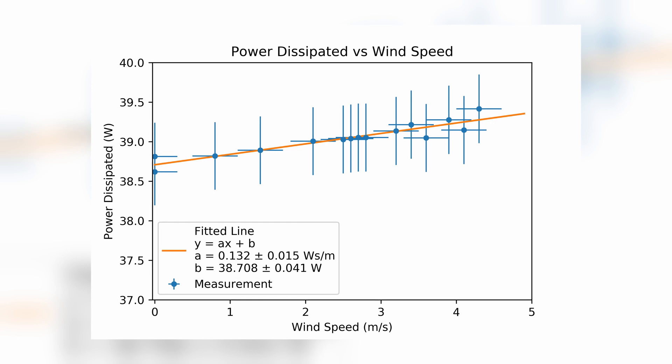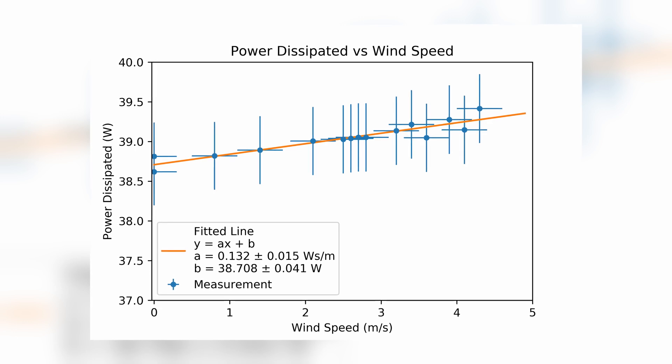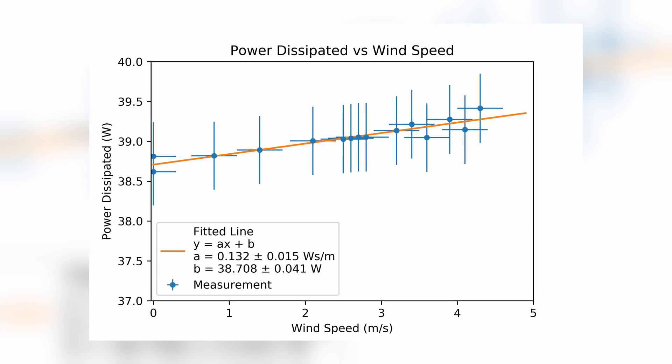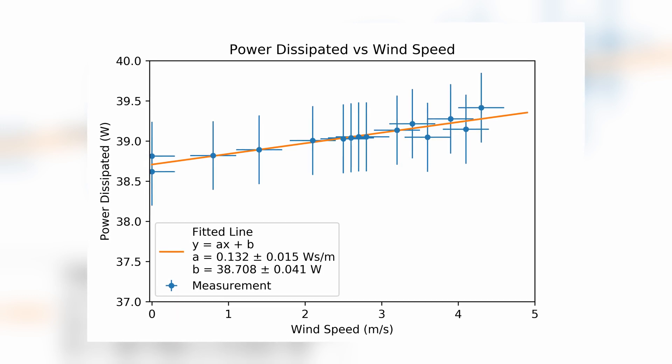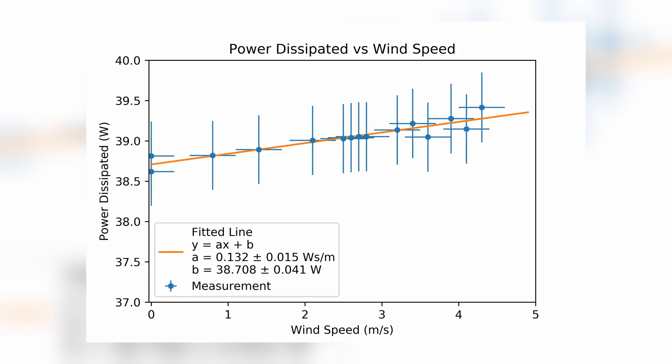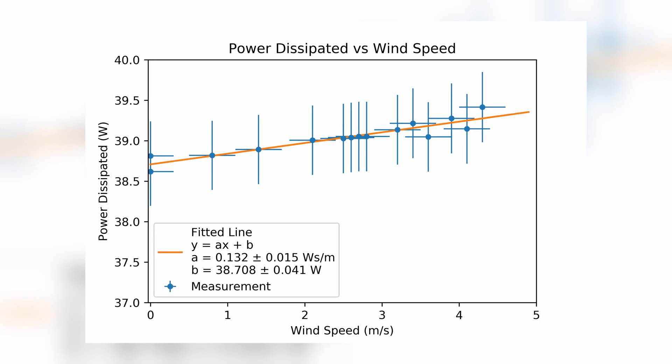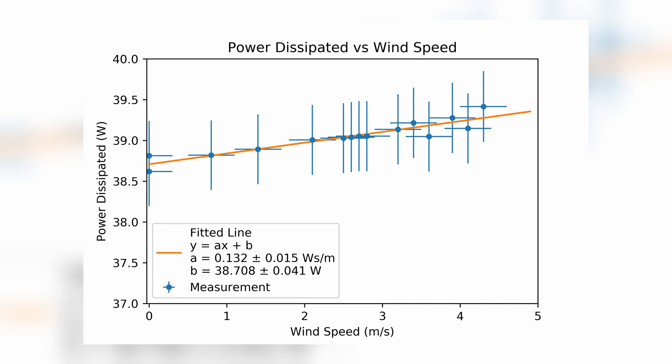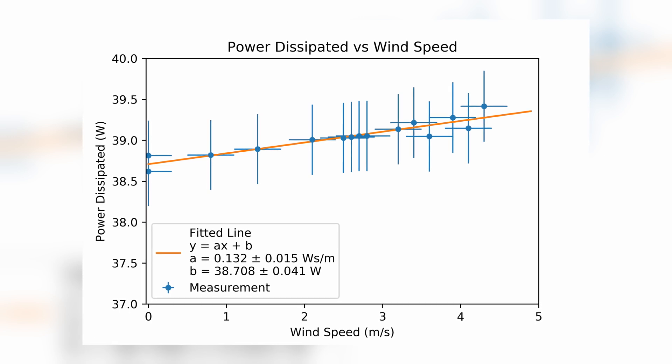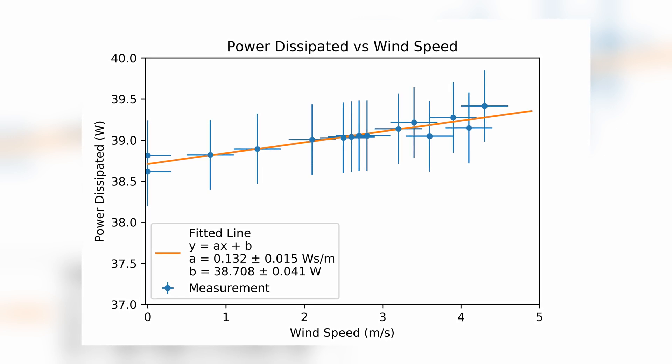In theory, I should be able to measure the power dissipated by the coil and use it to measure the wind speed. Here, the uncertainty in slope is about 11%, so there's little hope to get more accuracy than that. But considering that my commercial hot wire anemometer is only accurate to within 5%, this setup really isn't that bad.